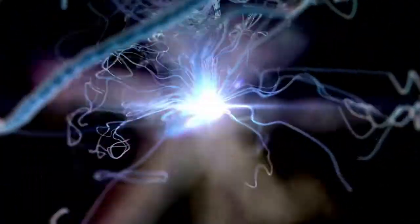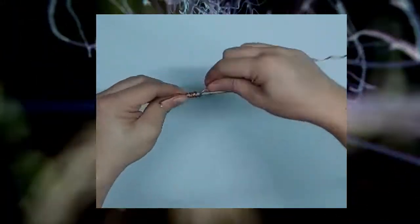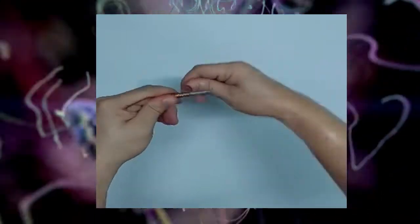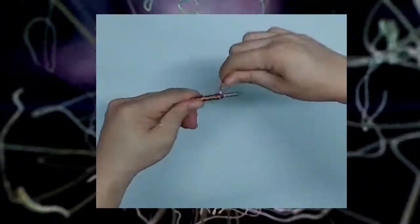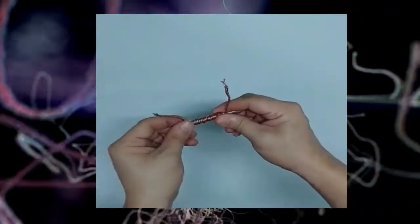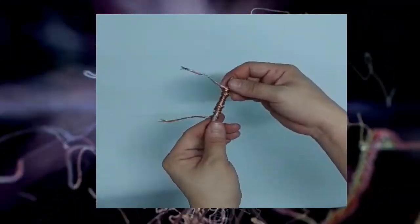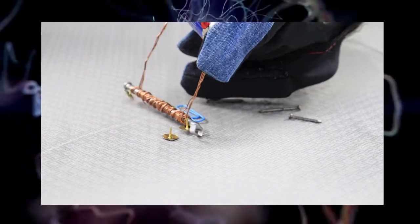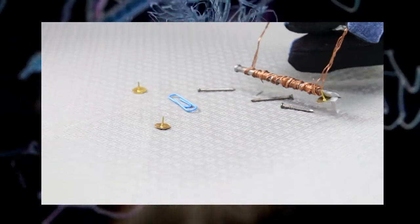How strong is the electromagnet? Let us make more coil of wires to the nail and observe how many metals are attached to the electromagnet. It attracted more metals because more magnetic fields are produced.